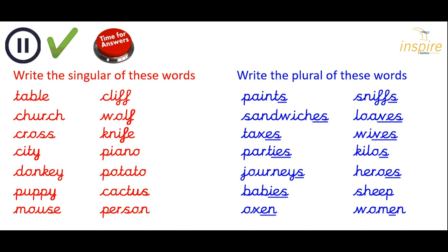The singular should be table. Church — remember it ends in CH. Cross — ends in SS. City — remember you have to go back to the Y. Donkey. Puppy — you need to go back to the Y. Mouse. Cliff. Wolf — go back to the F, not the V. Knife — remember the F, not the V. Piano. Potato — neither of those have an E on the end. Cactus — remember that US on the end for the singular. And person.